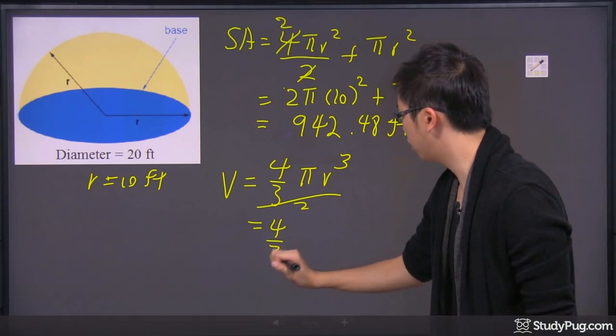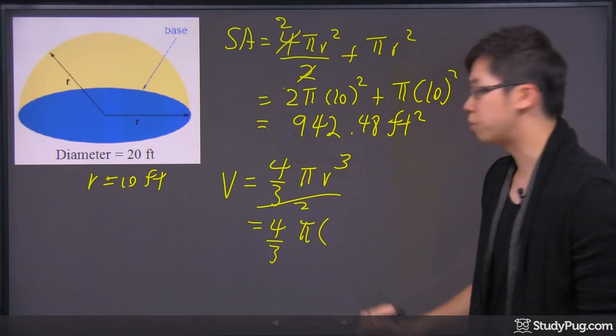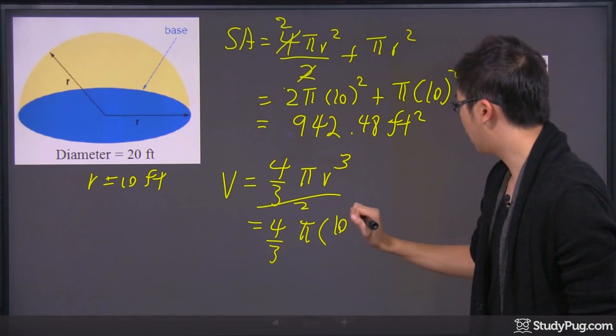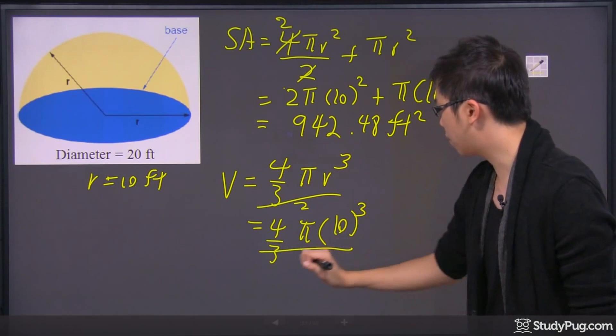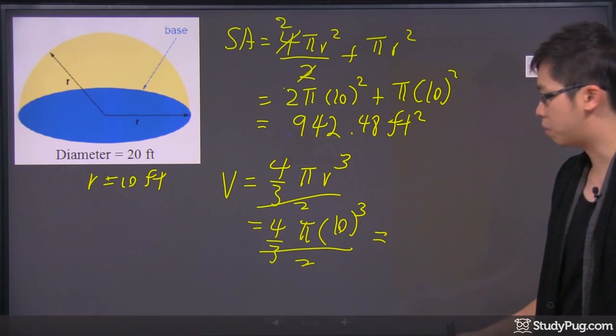So it's 4/3 π times the radius, which is 10, and cube it, and just divide it by 2. Sorry about the messy writing.